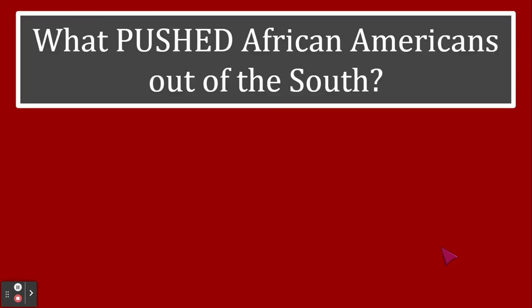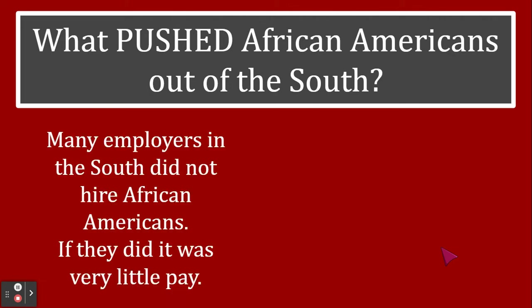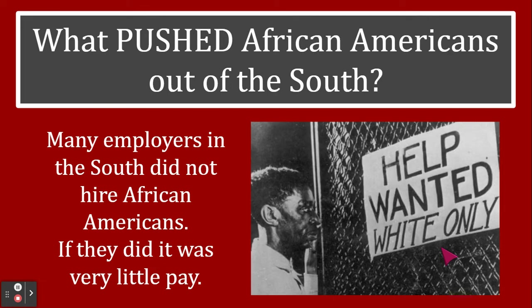There are a couple of things that pushed African Americans out of the south. One is that many employers in the south did not hire African Americans, and if they did, it was for very little pay. Here we have an example of a help wanted sign from the southern states during the Jim Crow era: 'Help Wanted — White Only.' This is an example of how employers often didn't hire African Americans, and if they did, they were paid less than other workers.